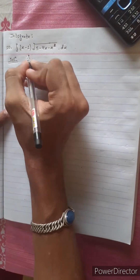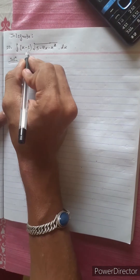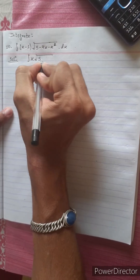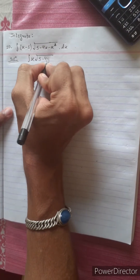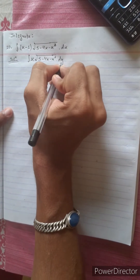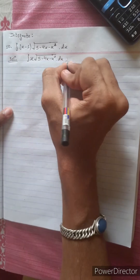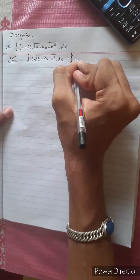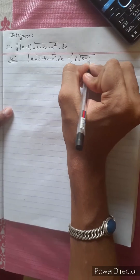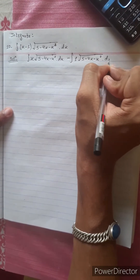Let's start with the integral: x multiplied by √(5 - 4x - x²) dx, minus 1 times √(5 - 4x - x²) dx.